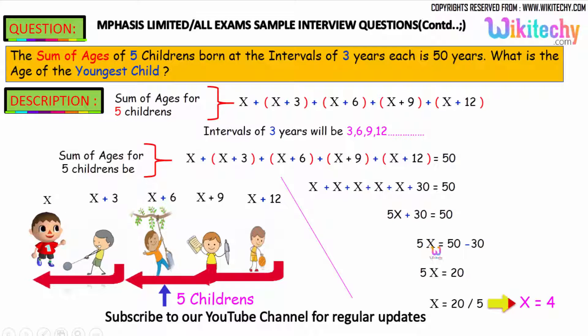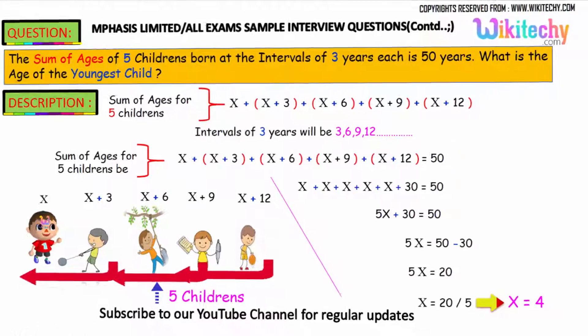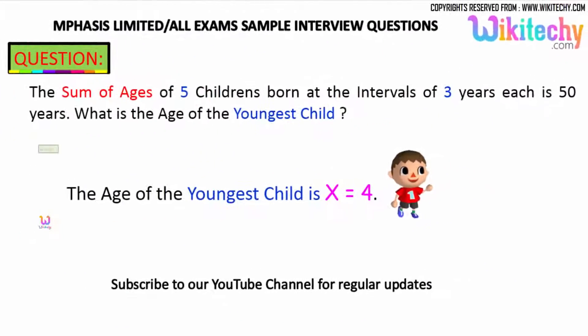So 5x is equal to 50 minus 30, you got 20. And x is equal to 20 divided by 5, you got the value as x equal to 4. So the value of x, the youngest child's age, is 4. That's the answer.